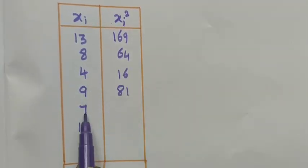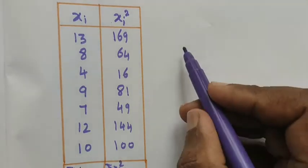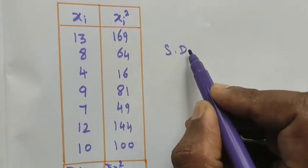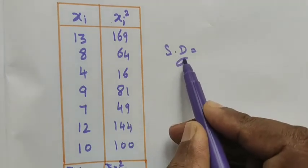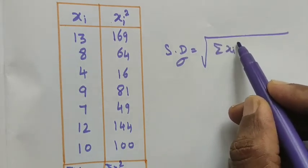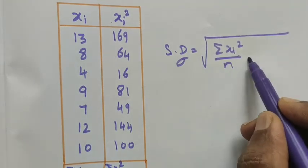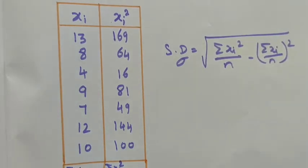And then 9 square is 81, 7 times 7 is 49, 12 times 12 is 144, and 10 times 10 is 100. Now we want to find out summation of xi and summation of xi square, because we know the standard deviation formula. Standard deviation SD equals root of summation xi square divided by n minus summation xi divided by n whole square.